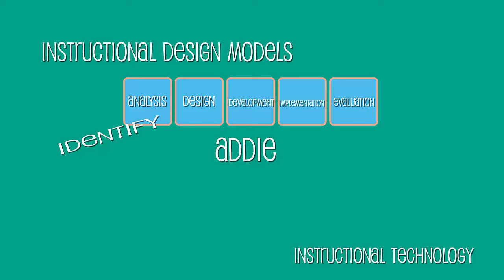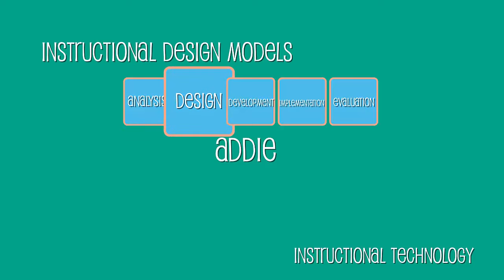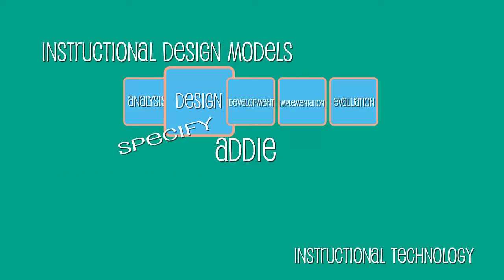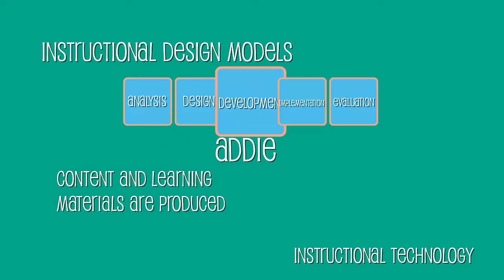During the design phase, the designer goes through the process of specifying learning objectives, storyboards, prototypes, the user interface, and the content. The key word in this phase is specify. During the development phase, the content and the learning materials are produced, all based on the design phase. The key word for this phase is produce.